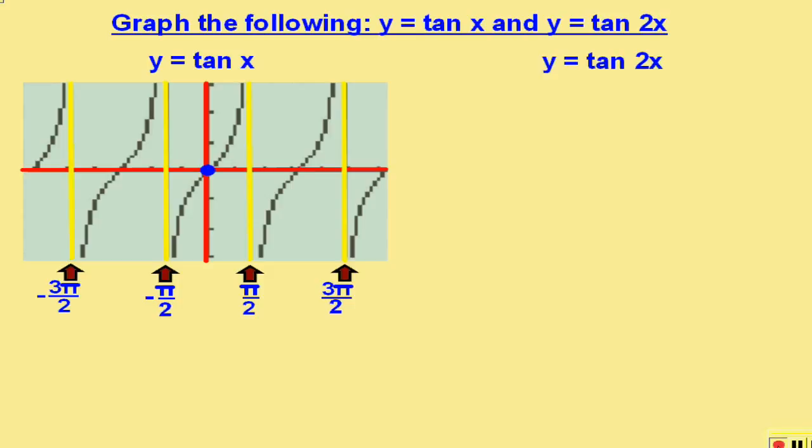The tangent at zero is zero, because the slope of tangent at zero is zero. The tangent of pi over 4 is 1. The tangent of negative pi over 4 is negative 1.